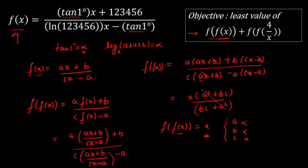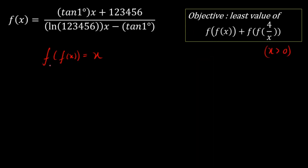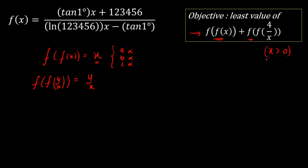In the previous slide we calculated that f(f(x)) = x, and this was independent of the three constants a, b, and c. Similarly, since f(f(input)) = input, we get f(f(4/x)) = 4/x. Our objective is to find the least value of f(f(x)) + f(f(4/x)), which is now simply x + 4/x, for x greater than 0.